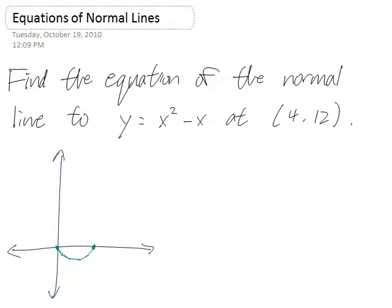And since the parabola points up, because it's positive x squared, it looks kind of like this. And the point (4, 12) is about here.